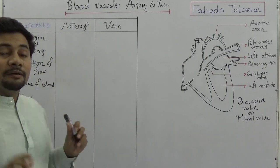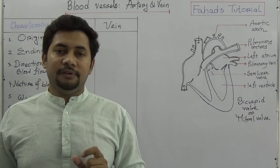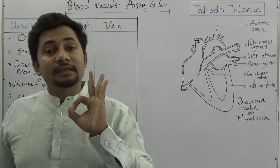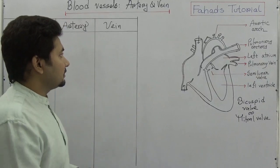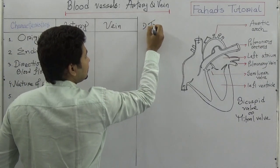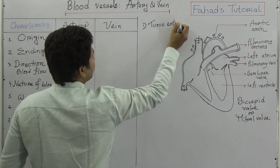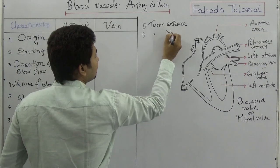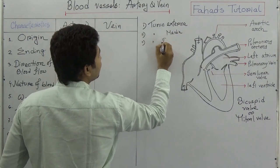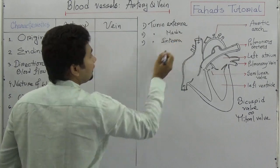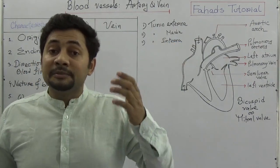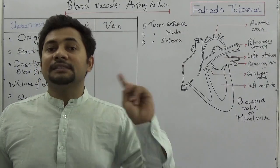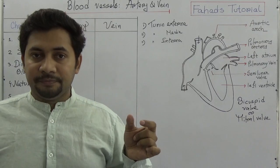Before discussing the differences between arteries and veins, we need to know their structure. Both arteries and veins have three different layers. The outermost layer is named the tunica externa, the middle layer is the tunica media, and the innermost layer is the tunica interna. The names reflect the positions of each layer, and the outermost layer is a connective tissue.